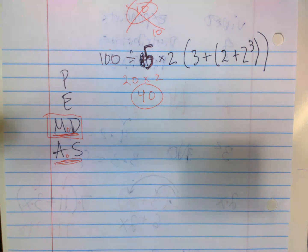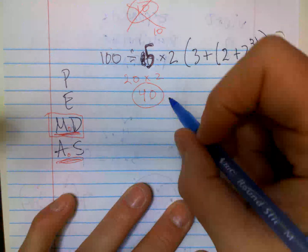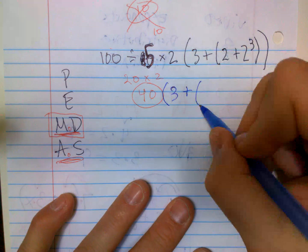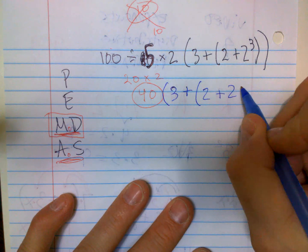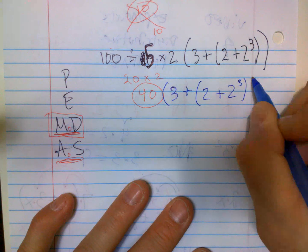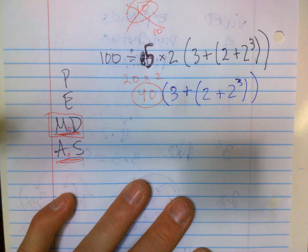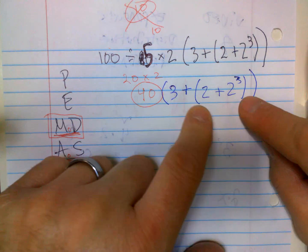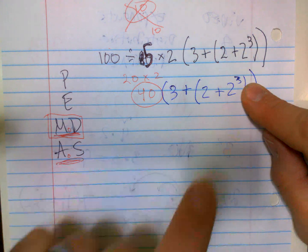All right, so now my new math problem, I have a 40 outside here. I could have done what was in parentheses first. I was trying to show you that. All right, so I got 2 to the third power. Parentheses first. Inside the parentheses I have 2 plus 2 to the third. Well that's an exponent, I got to do that first.